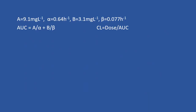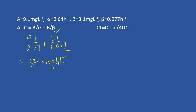To identify the area under the curve, you need to use this equation. It is straightforward — just plug in the values: 9.1 divided by alpha (0.64) plus 3.1 divided by beta (0.077). The answer you should get is 54.5. So this is the area under the curve.